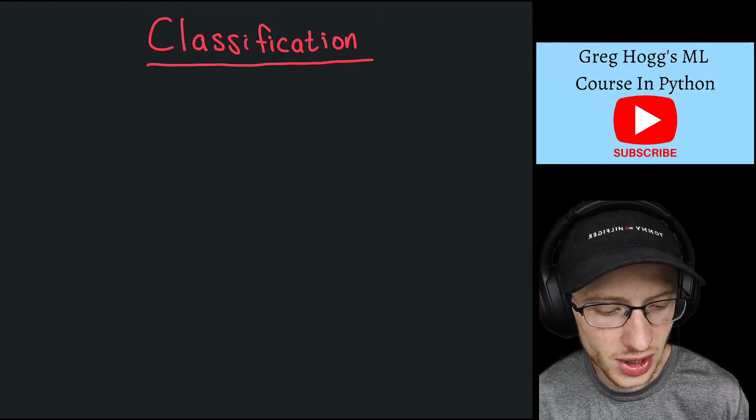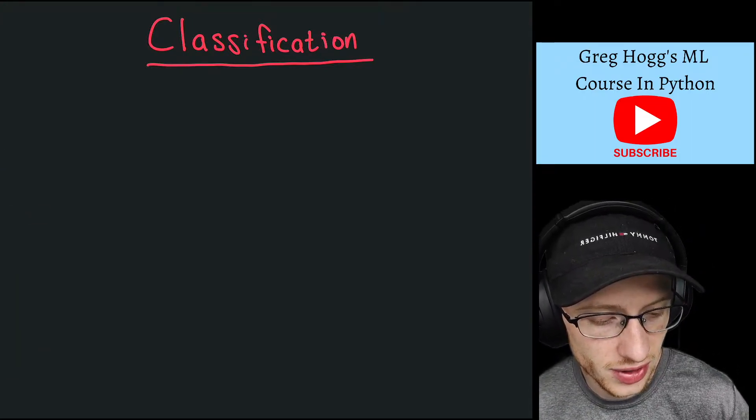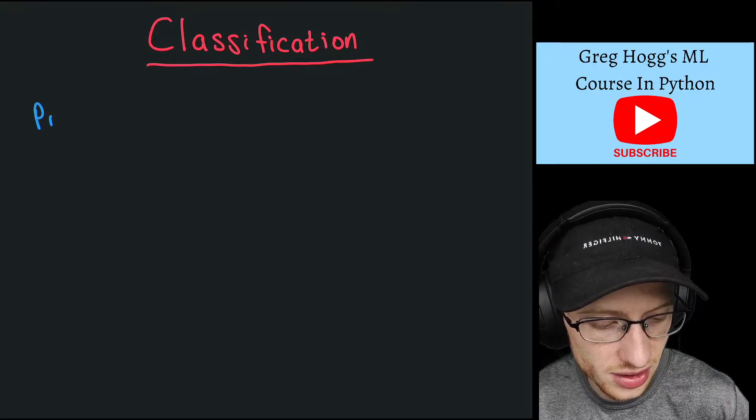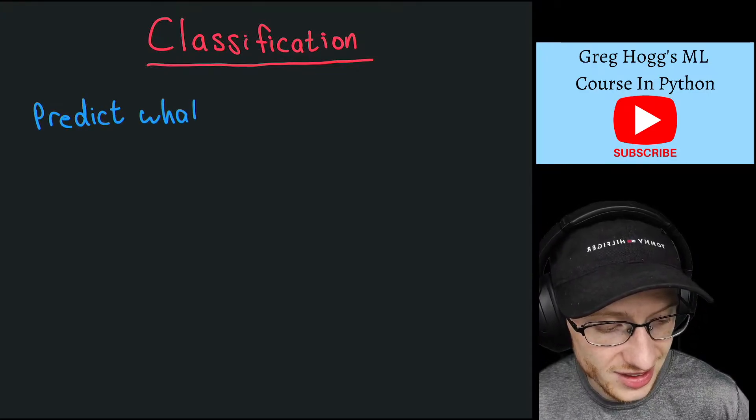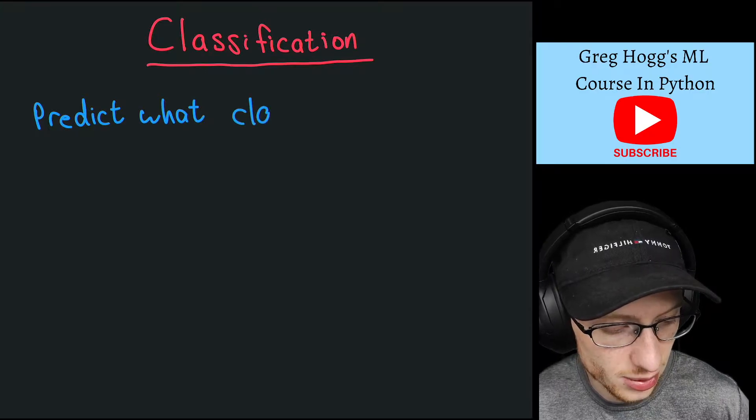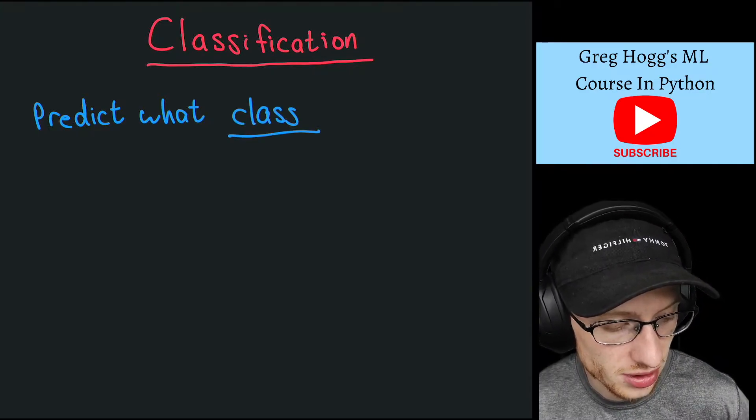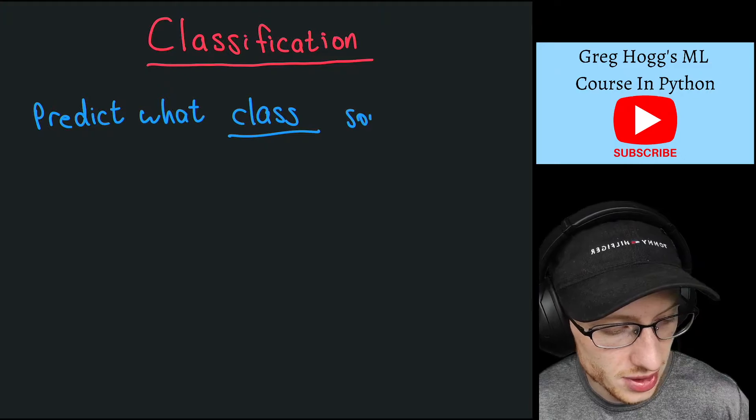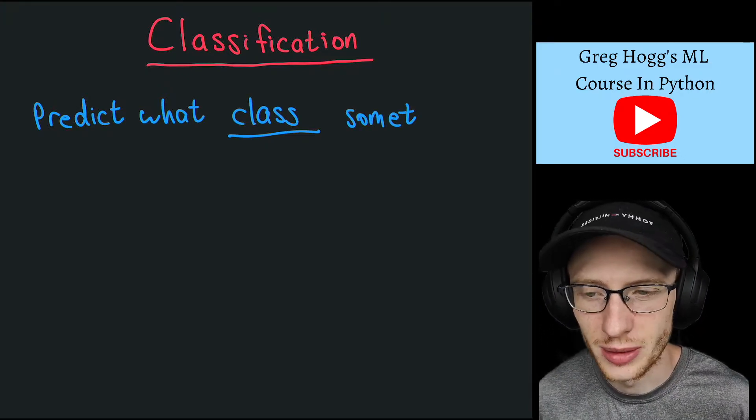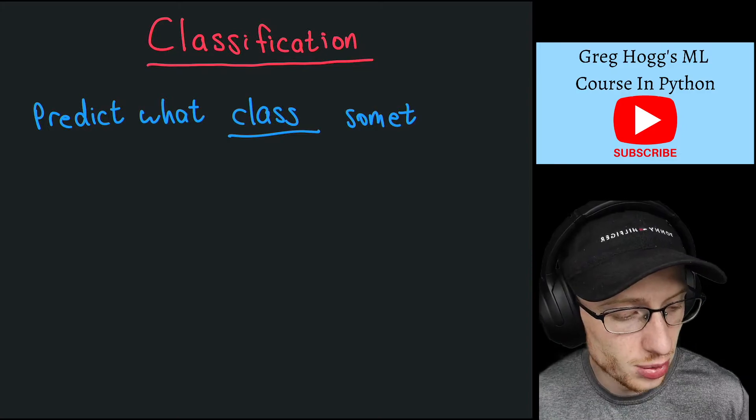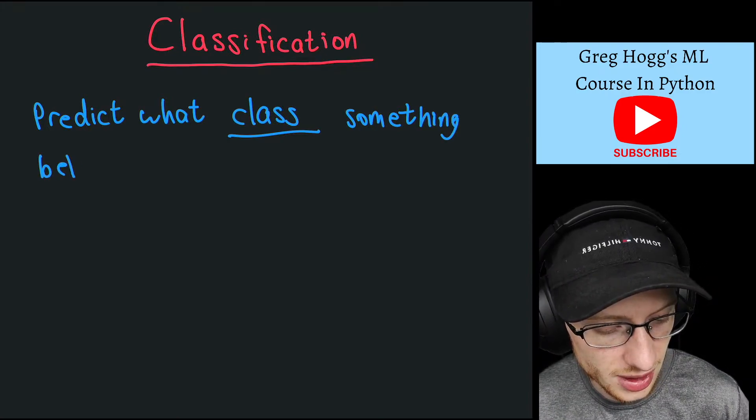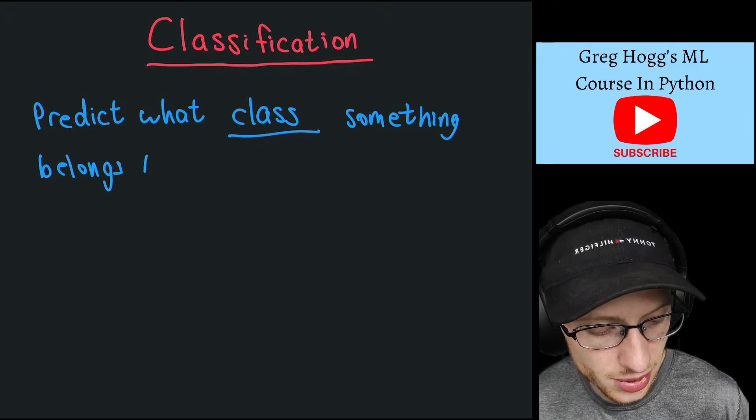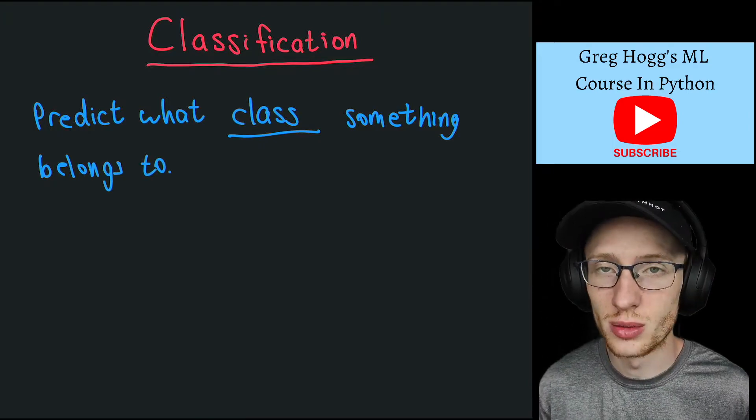For classification, we mean this simple thing: predict what class something belongs to. We call that something x—it's your input. Predict what class something belongs to.